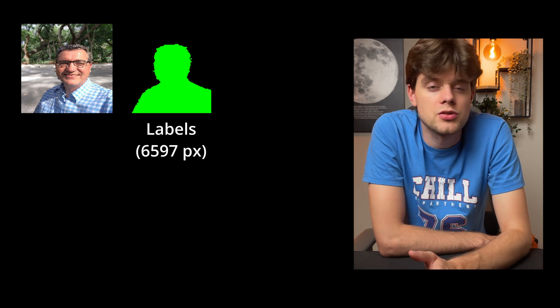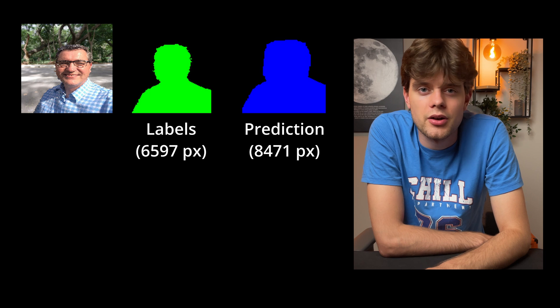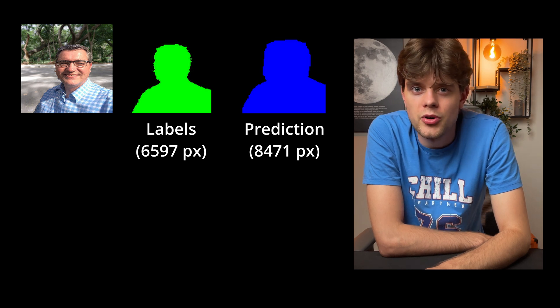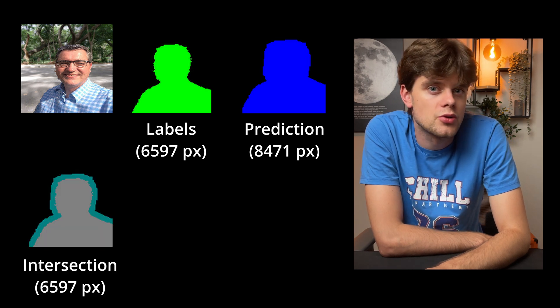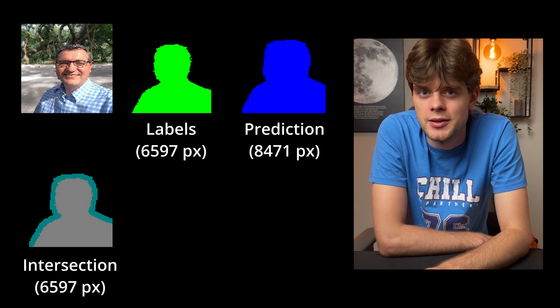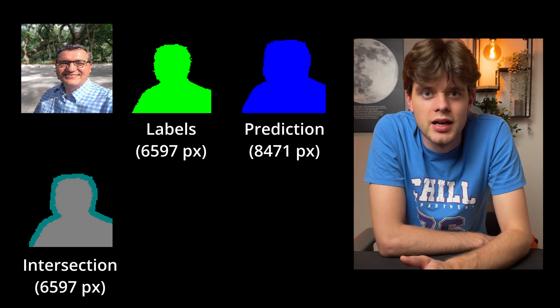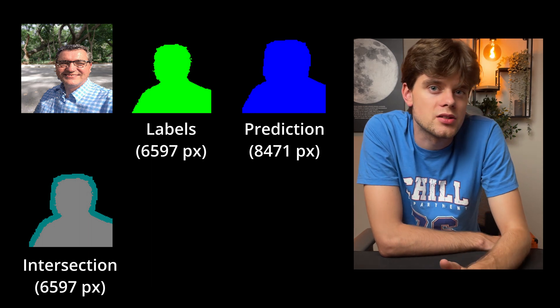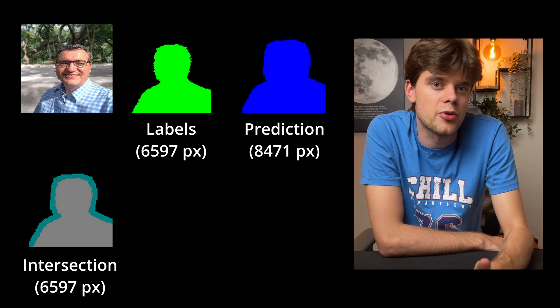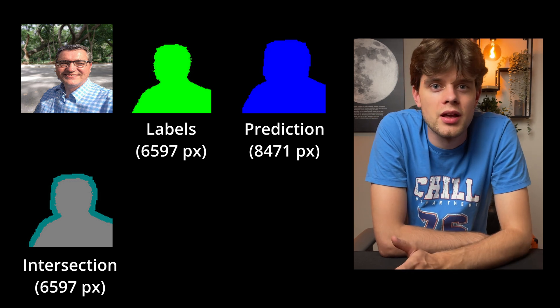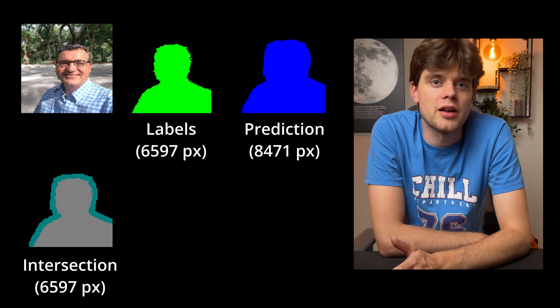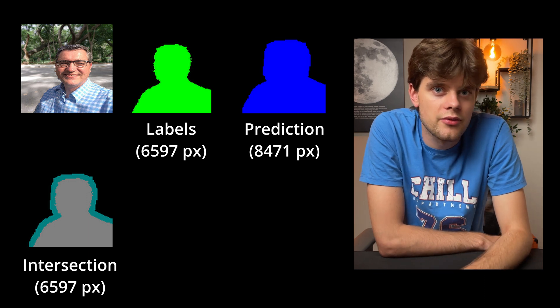We have our model and we want to know how well it performs on this image. We have our labels created by a human, also known as ground truth, and we have our model's prediction. We take our predictions and count the number of pixels that match our ground truth for the class we are interested in — that's our intersection. Next, we count the number of pixels belonging to the same class in both prediction and ground truth, sum them up, subtract the intersection, and we have our union.